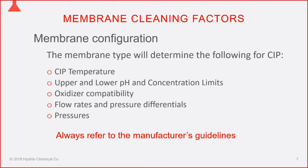A typical RO might have five membranes per vessel; a UF might have four or three. You should get a pressure differential generally around 10 to 15 psi. The greater the thickness of the flow spacers in the membrane, generally the higher that number can be. If you calculate that number for each stage and get around 10–15 psi, your hydraulics and flow are generally good. Always refer to the manufacturer's guidelines and ensure warranty compliance.